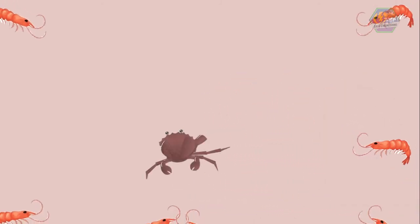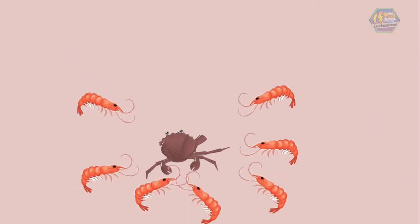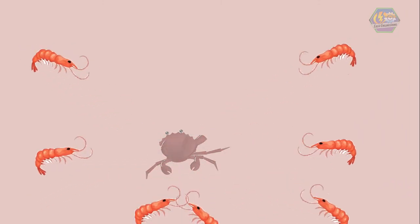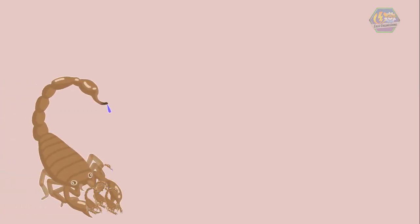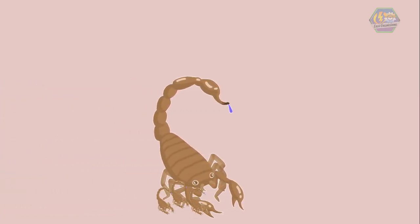Some crustaceans are scavengers, that means they eat what's left of animals' bodies. So how do arthropods reproduce? Most arthropods lay eggs, though some give birth to live young. In many cases, the animals hatch from the eggs in a different form than the adult form.